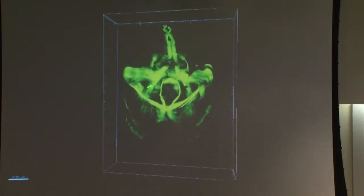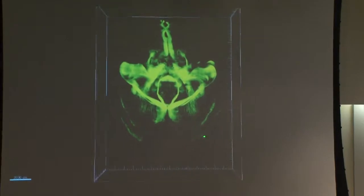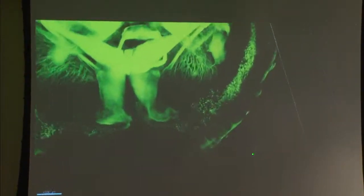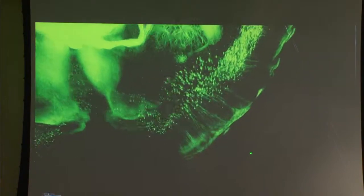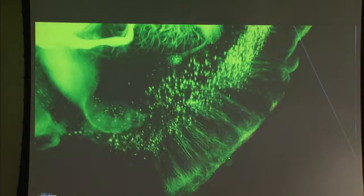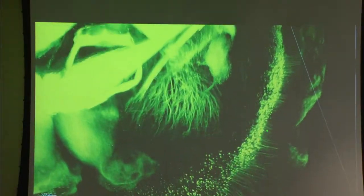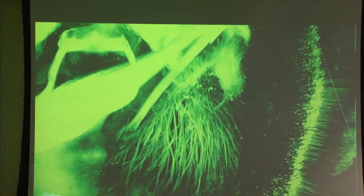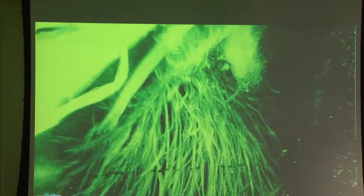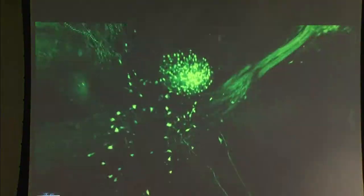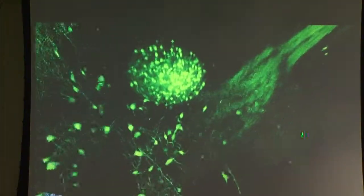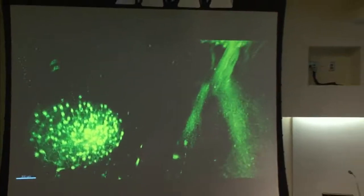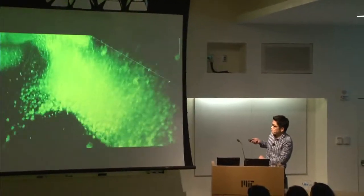This is a mouse brain expressing fluorescent proteins in a subset of projecting neurons. I imaged the ventral half of the mouse brain, and you can see the cortical neurons, their projections, distinct brain structures, and distribution of these GFP-expressing neurons.